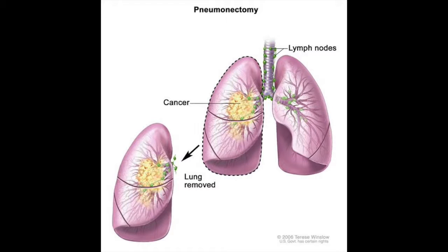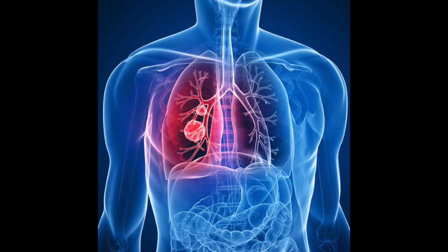First, we'll talk to you about what a pneumonectomy surgery is used for. A pneumonectomy is a surgery performed in order to remove a lung or a section of a lung. It is most commonly used as a treatment for lung cancer. However, it may also be used if a patient has severe chest injury. The types of disorders this procedure can treat include lung cancer through the surgical removal of the affected area of the lung.